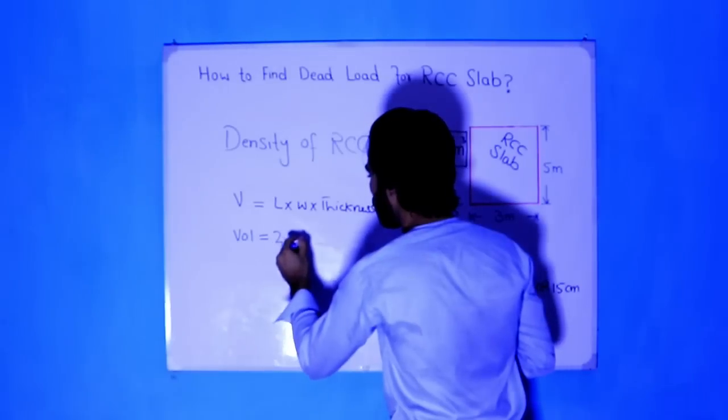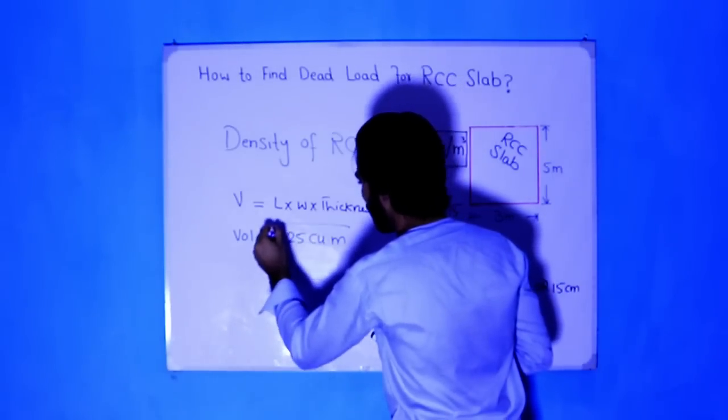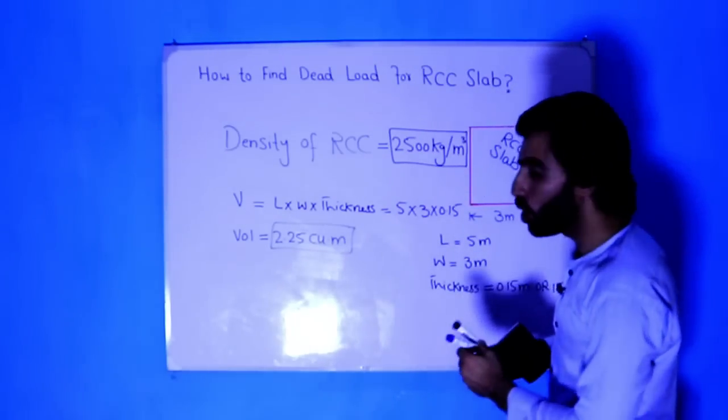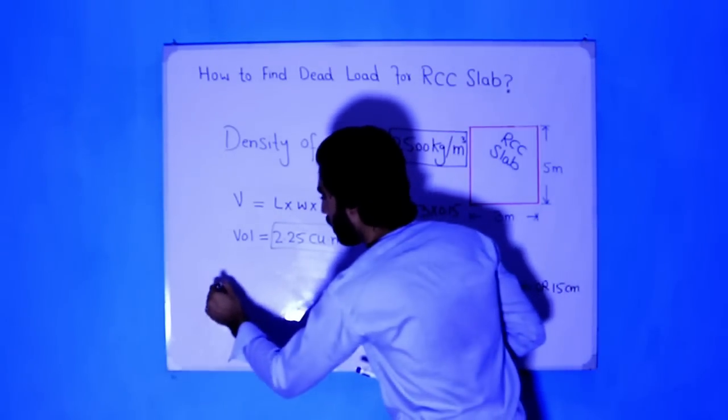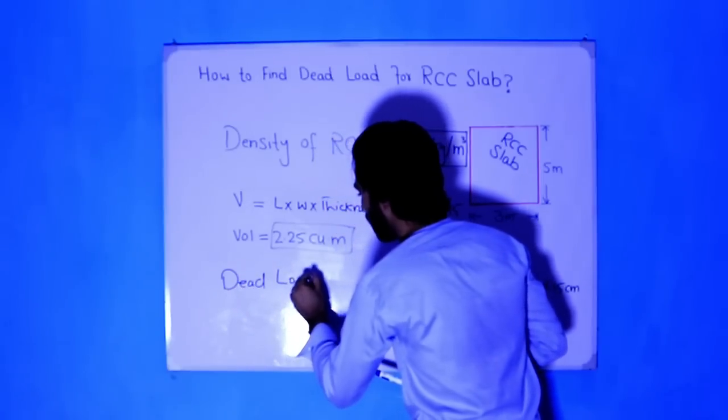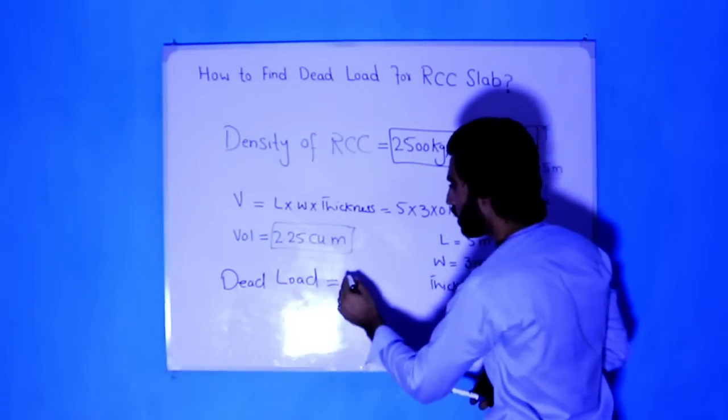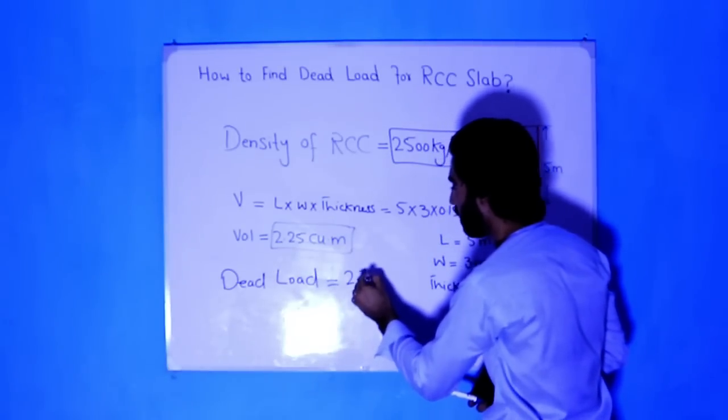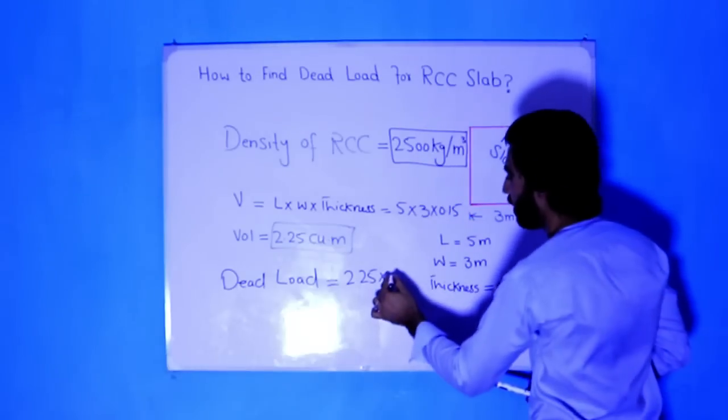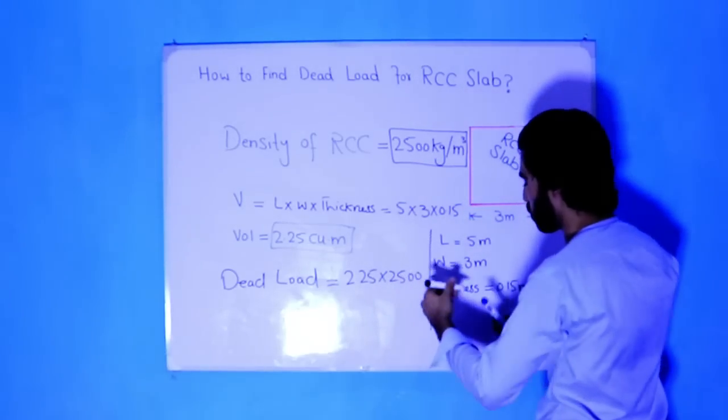What is the dead load? Dead load equals total volume, that is 2.25, multiply the density which is 2500.